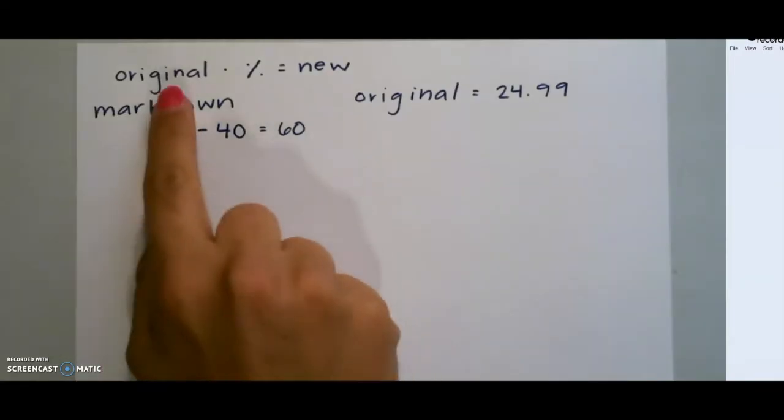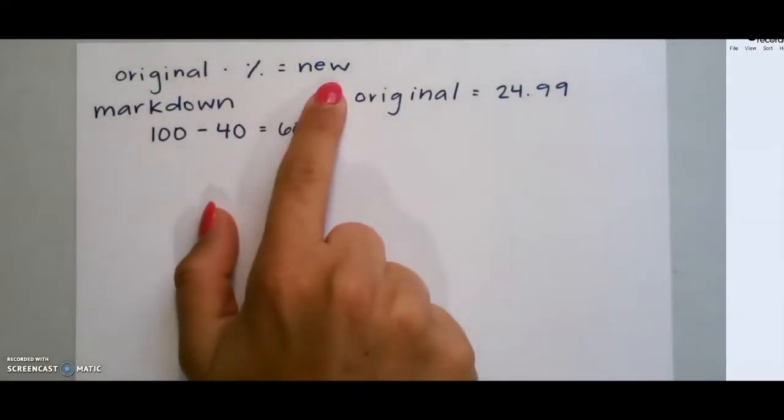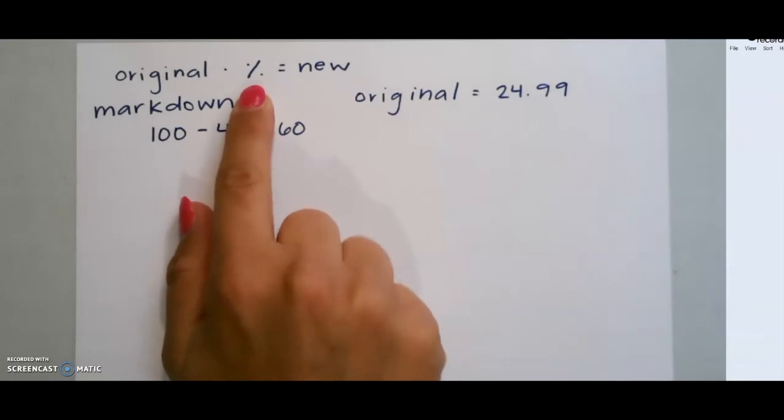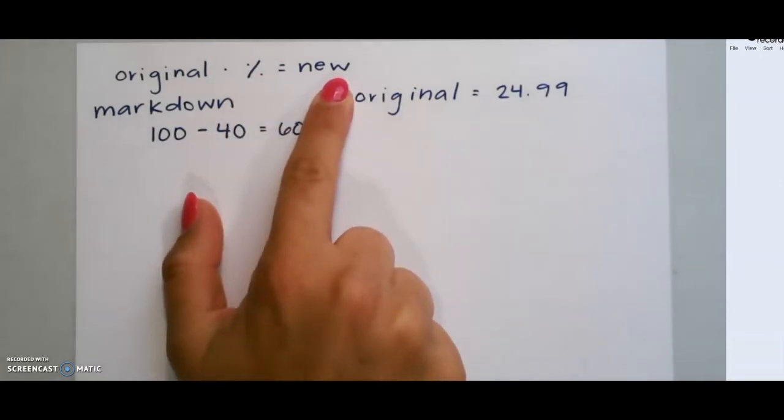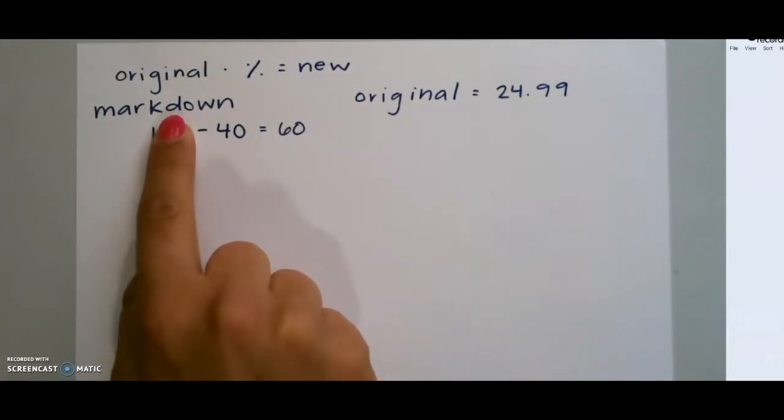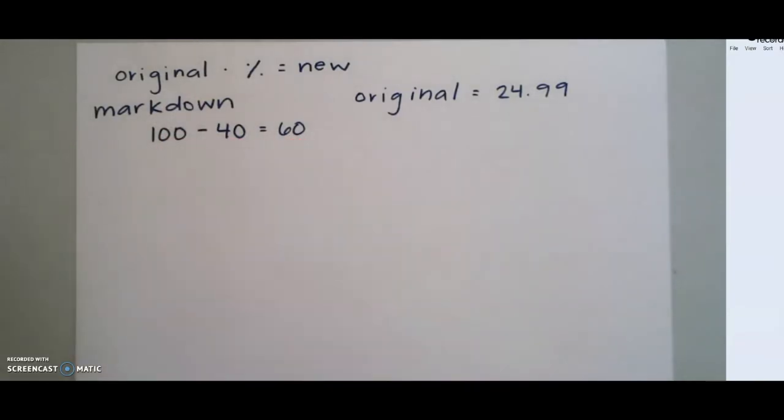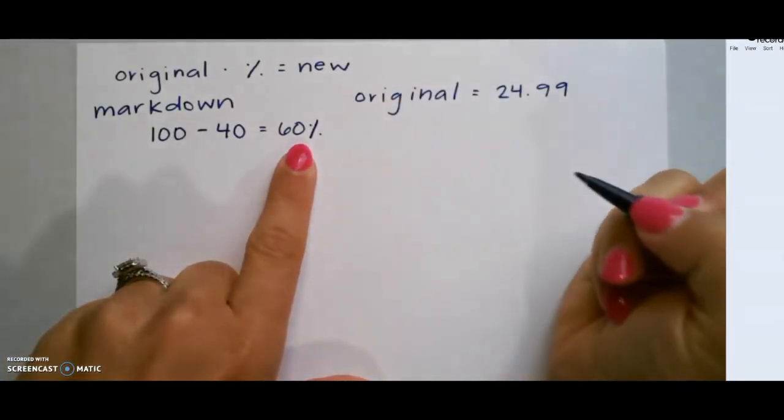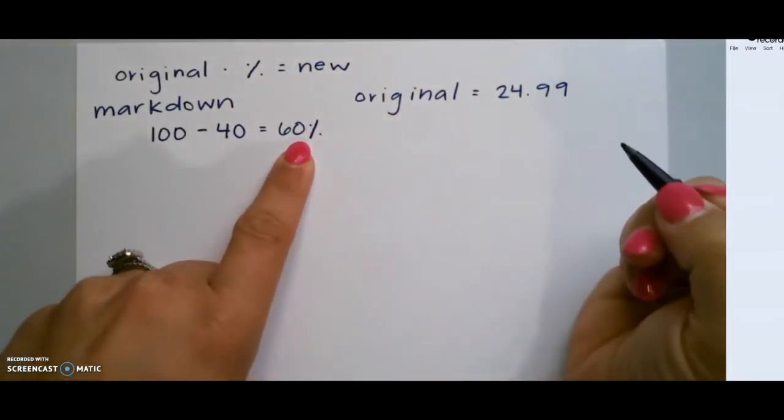So we're going to use our equation: original times percent equals new. But this time we are given the percent, so we're looking for our new price. We determined that it was a markdown because it's on sale, so we do 100 minus 40, which gives us 60%. This is because we are paying 60% of the total price.